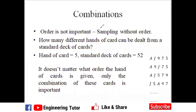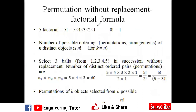Welcome back, students. We were talking about combinations and permutations, and we found out the difference between them. Let's move on. Permutation without replacement is basically the mathematical formulation of sampling without replacement and with order. Factorial is the important mathematical operator in this scenario. If you have n total elements and you want to find the permutation of k elements, the formula will be this one.